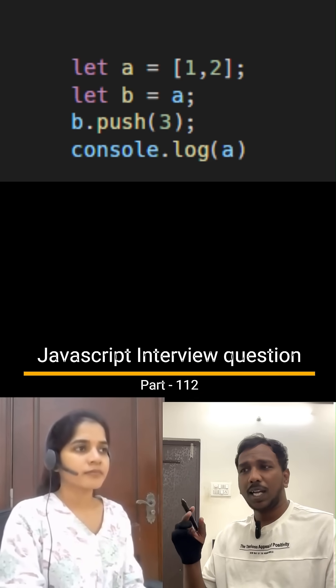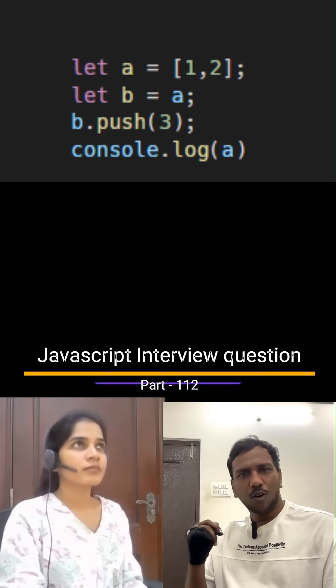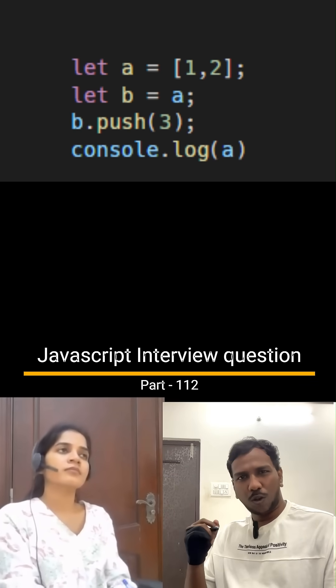Okay, the output for the above question will be array of one comma two comma three. Before going to the explanation, share this link to your friend and challenge them.